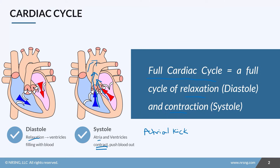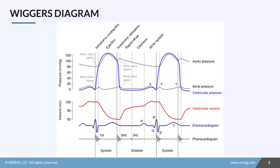One great way to visualize what's happening in the heart during this full cardiac cycle is the Wiggers diagram. This isn't something you need to memorize, but it's a really helpful visual to see how everything relates to each other. At the bottom you'll see the phonocardiogram — our heart sounds. Systole is our S1 sound and diastole is our S2 sound.